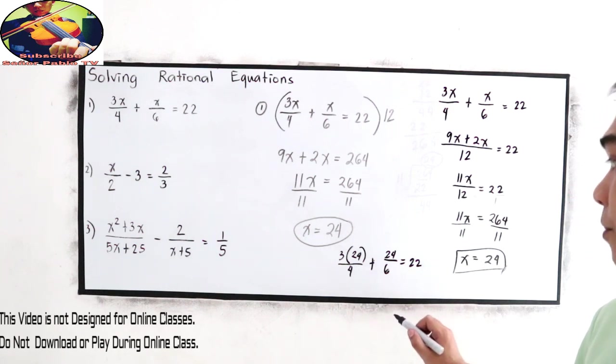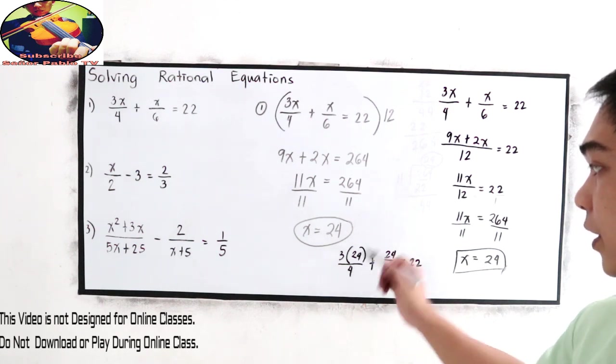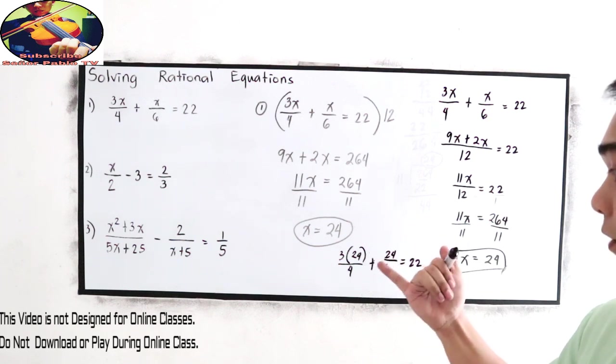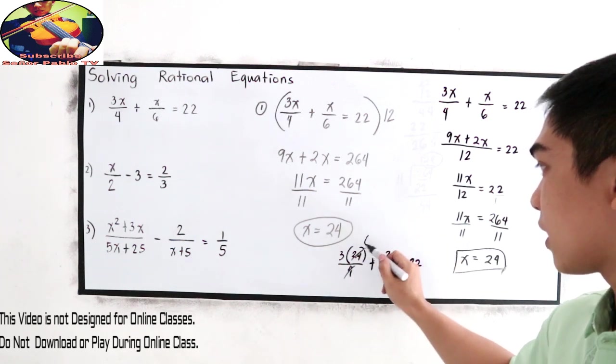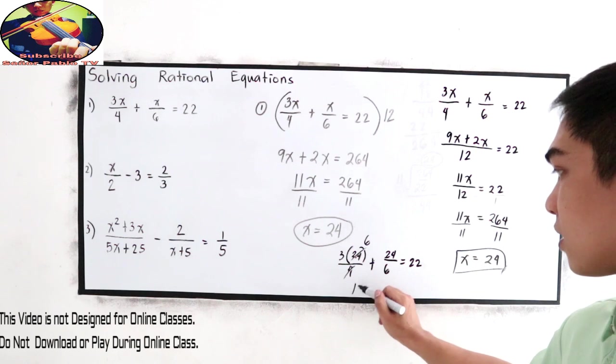We can use cancellation method. So 24 divided by 4, that will become 6. So 3 times 6, this is 18.